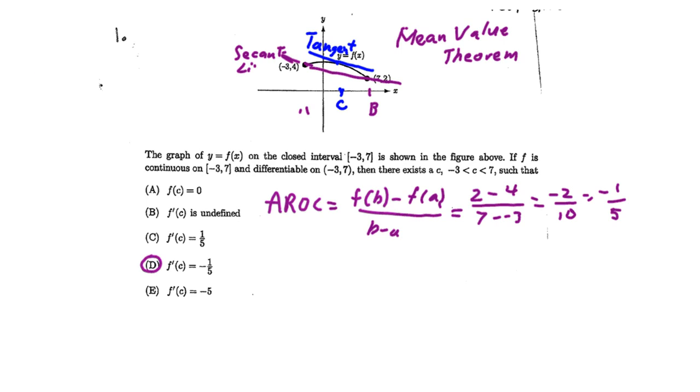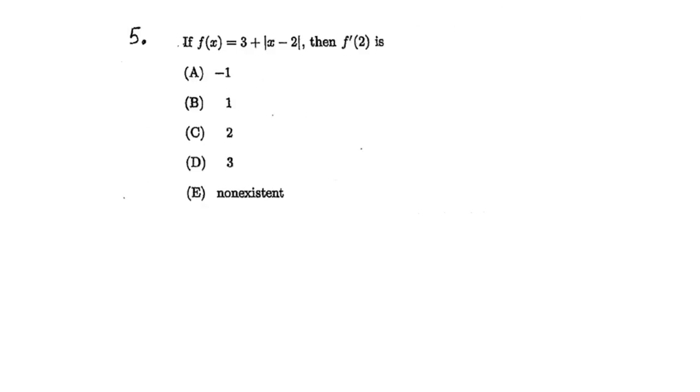More people need to get this right. Problem 1, we're going to go to 5 now. If F of X equals 3 plus the absolute value of quantity X minus 2, then F prime of 2 is...